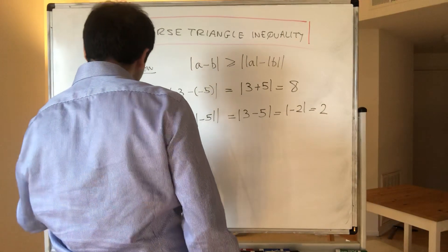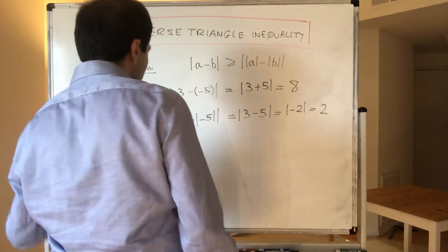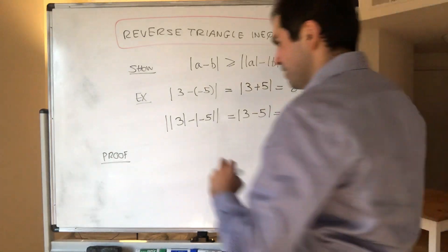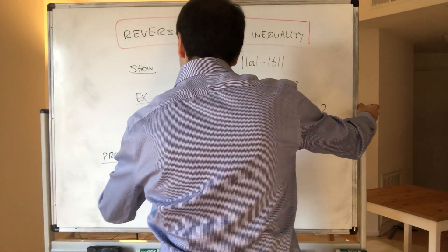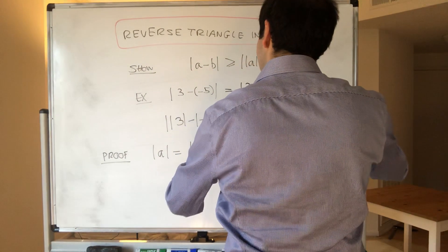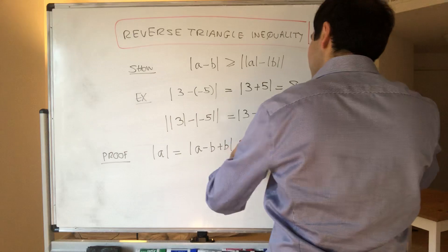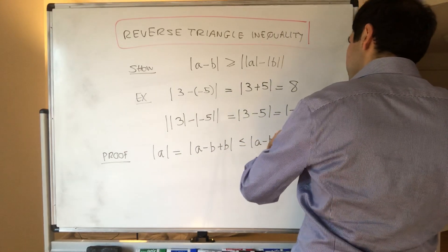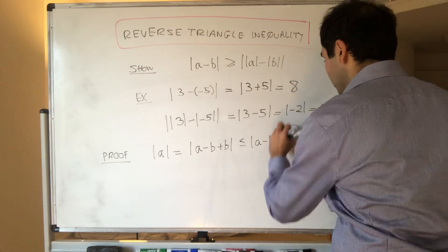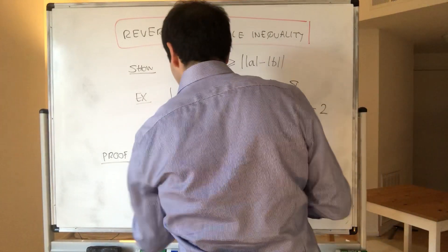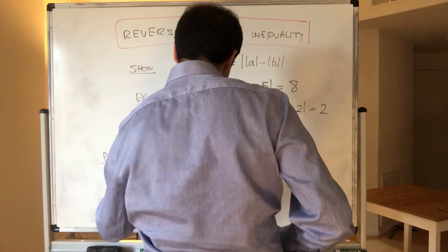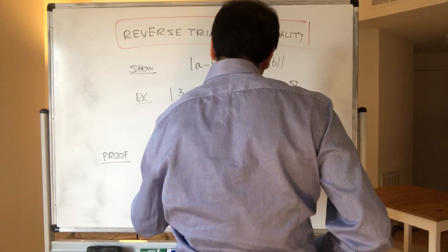Now, how do I prove this? It's actually just an application of the triangle inequality. Consider absolute value of a — let's play with this a little bit. This is a minus b plus b, and that's less than or equal to absolute value of a minus b plus absolute value of b. So if you put this absolute value of b on the left-hand side, what you get is the difference between absolute values is less than or equal to the pure absolute value.